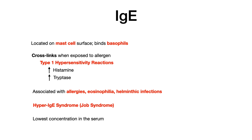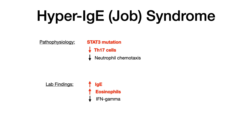Clinically, IgE is associated with hyper-IgE syndrome, also known as Job syndrome, and IgE is the lowest concentration isotype in the serum. Job syndrome is due to a STAT3 mutation, which decreases TH17 cells. TH17 cells help control neutrophil chemotaxis, so when the STAT3 mutation decreases the pathway generating TH17 cells, there is less neutrophil chemotaxis. On labs for USMLE or COMLEX, you'll see increased levels of IgE, increased eosinophils, and decreased levels of interferon gamma.